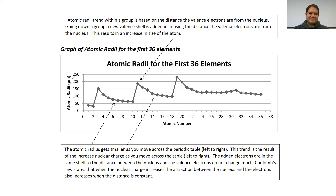Picometers — very small. We're tracking the radius of each atom by atomic number and graphing it. Atomic number 1 is hydrogen, atomic number 2 is helium. Looking at the trend from hydrogen to helium, the radius is getting smaller — hydrogen is a larger atom than helium.